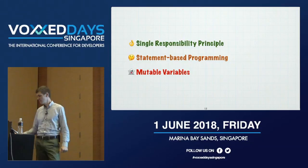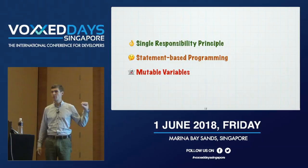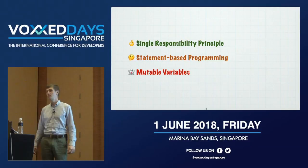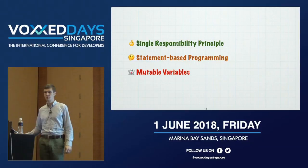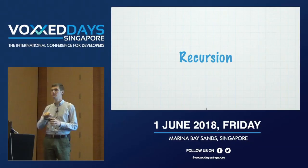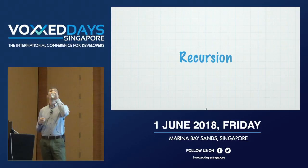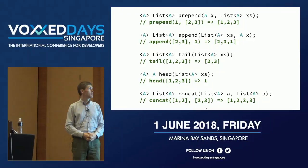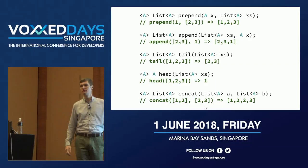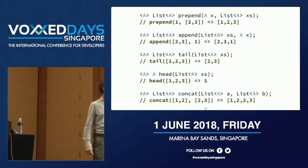Where are we? We've solved the single responsibility principle issue. We've sort of solved the statement-based issue — in our final program it's all expressions, but at the micro level we still have for loops, if statements, and mutable variables. So let's deal with those. Who knows recursion?